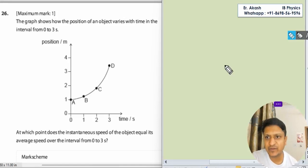Hello champions, how are you? So we have another question to do. The question says a graph shows how the position of an object varies with time in the interval from 0 to 3 seconds.